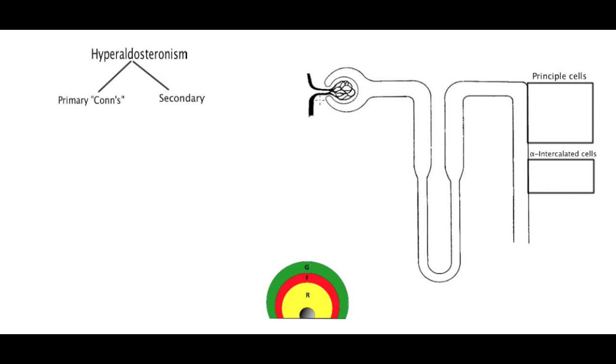But before we get into that, let's talk about a normal patient with low blood pressure. When someone has low blood pressure, we have these baroreceptors located in the afferent arterioles of the kidney. They're located right here, and they're going to sense this low blood pressure. Once they do, they're going to secrete these enzymes called renin.